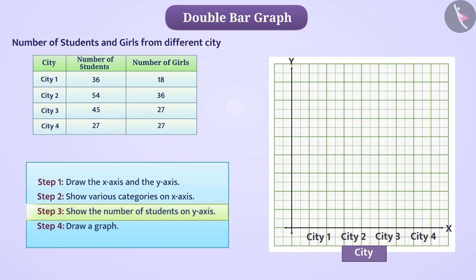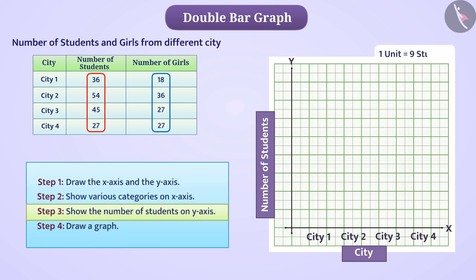On the y-axis, we will show the number of students. We will take a convenient scale to represent the numerical data correctly. Here we can take this scale as 1 unit is equal to 9 students. Because all the numbers are multiples of 9, so we will show the numbers 0, 9, 18, etc. on the y-axis.